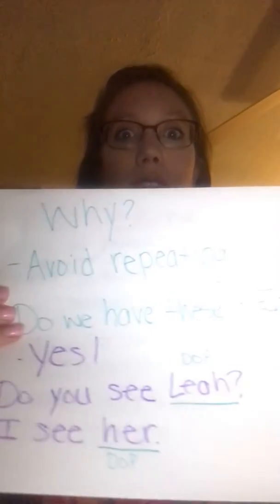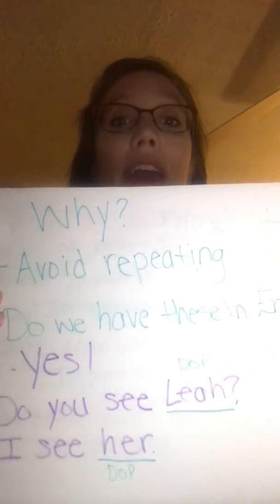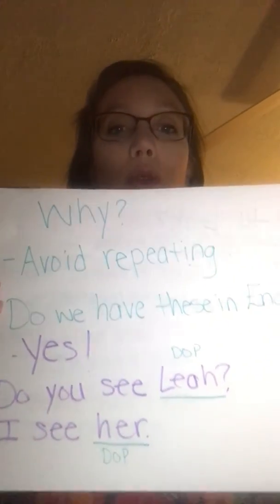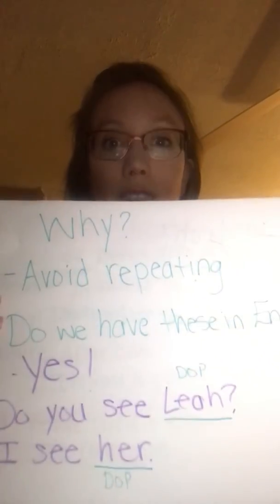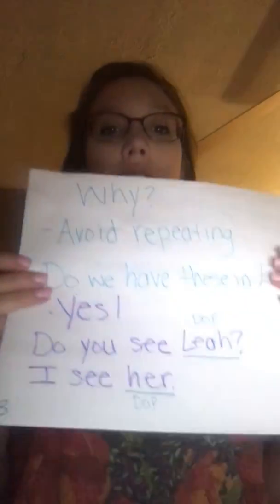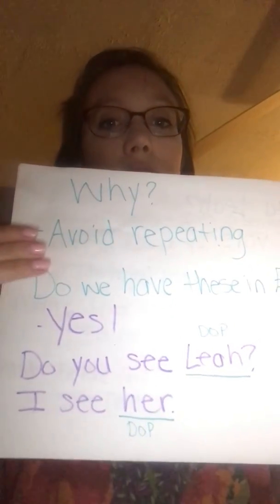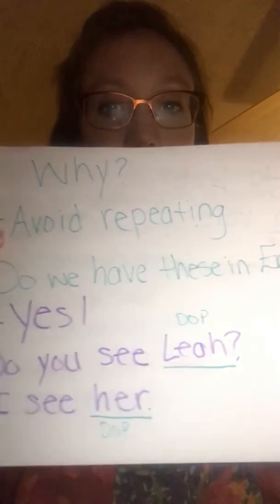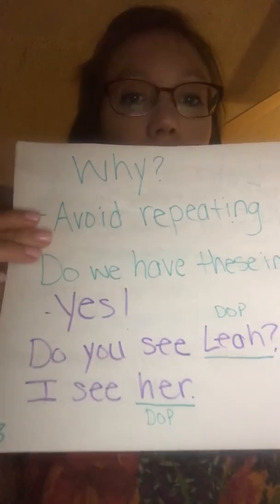Why do we have these in either language? They are to avoid repetition. They exist in our language too. For example: Do you see Leah? Yes, I see her. You don't need to repeat the name Leah again. 'I see her' replaces the word Leah. Leah and her are your object pronouns. In this case it is direct because nothing is done to or for Leah.